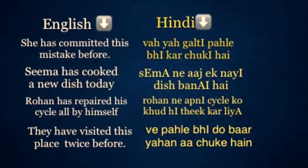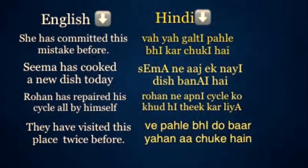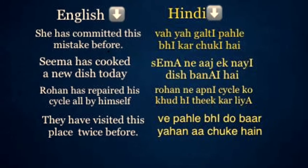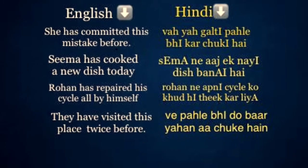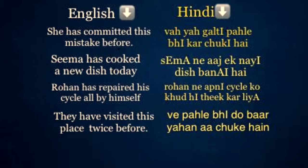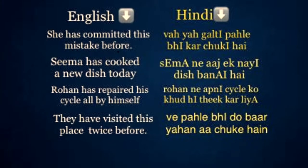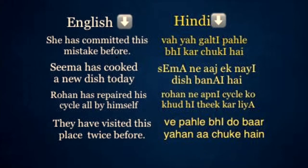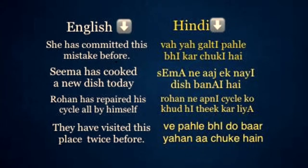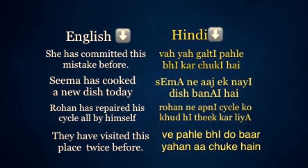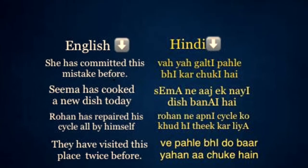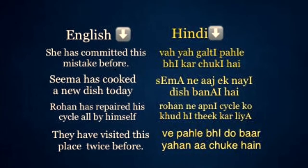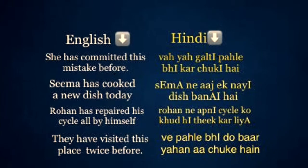Seema has cooked a new dish today — Seema ne aaj ek nai dish banai hai. Rohan has repaired his cycle all by himself — Rohan ne apne cycle ko khudhi thik kar liya hai. They have visited this place twice before — Vahe pehle bhi do baar yahan a chuki hai.